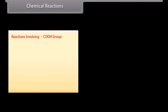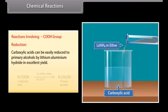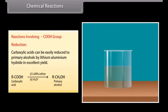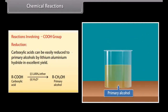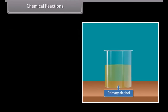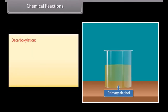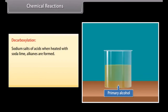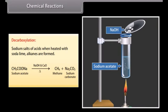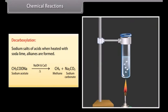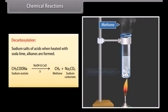Reactions involving the carboxylic group. Reduction: Carboxylic acids can be easily reduced to primary alcohols by lithium aluminium hydride in excellent yield. Decarboxylation: Sodium salts of acids when heated with soda lime, alkanes are formed. When sodium acetate is heated with sodium hydroxide and calcium oxide, it forms methane and sodium carbonate.